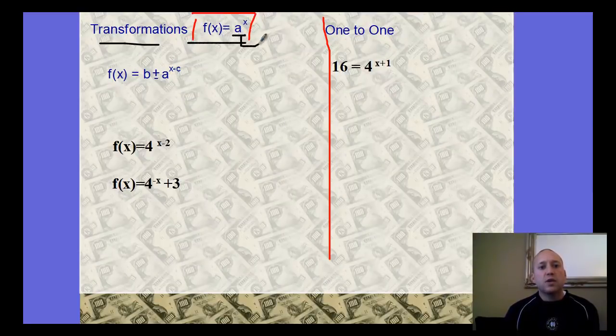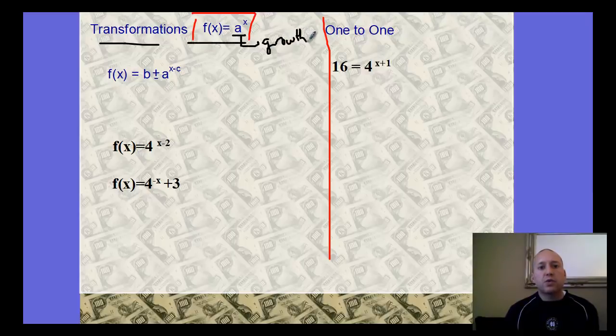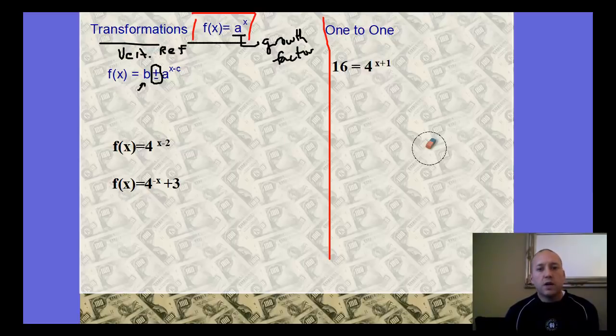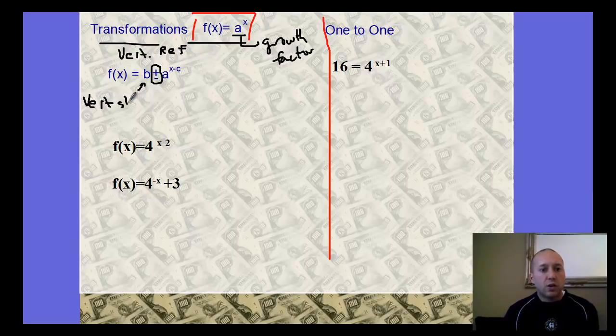Our transformations that apply for this, given our parent function a to the x: our a value is still our growth factor, telling us if we're growing or decaying and how much. The plus or minus is our vertical reflection. The b value here is outside of the exponent, applying to the function, the parent function, so it's actually the vertical shift, going up or down. The c value here is applying to the x before we take the power, so this would actually be the horizontal shift.